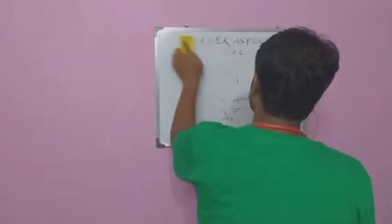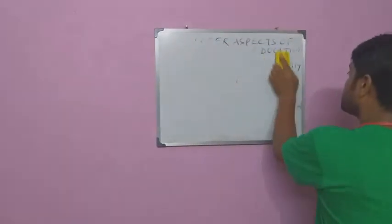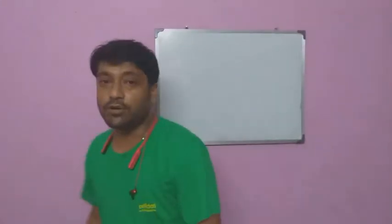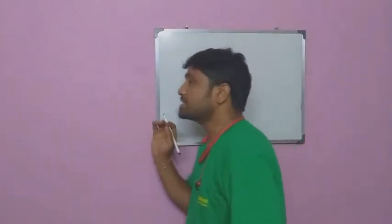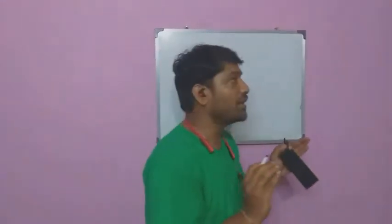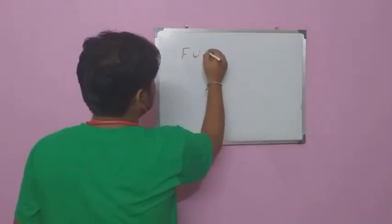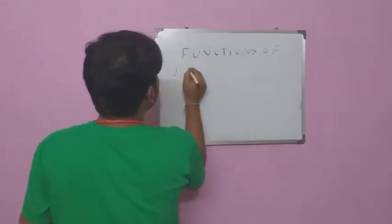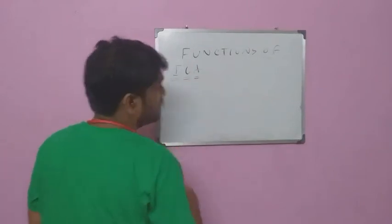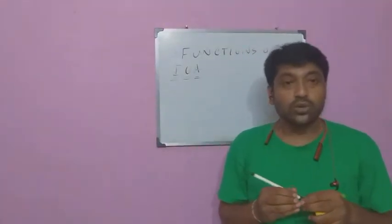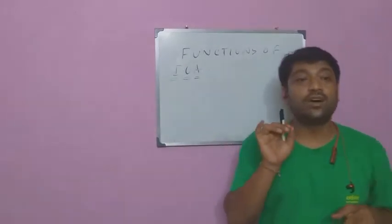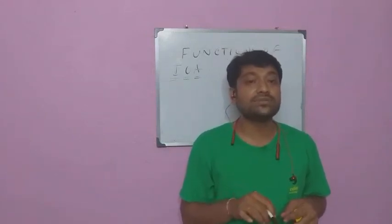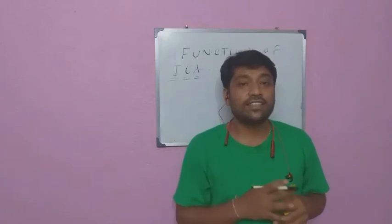Now I will discuss the functions of IOA, the Indian Olympic Association. IOA stands for the Indian Olympic Association. It is the main institution for coordinating the selection of athletes for the Olympic Games.